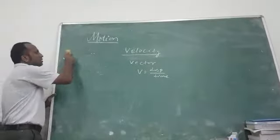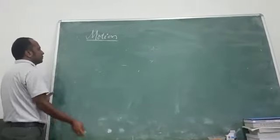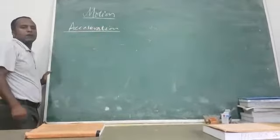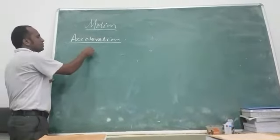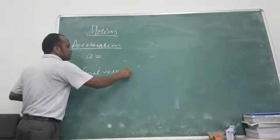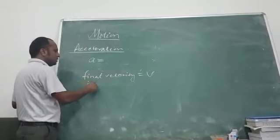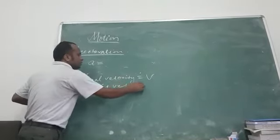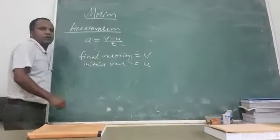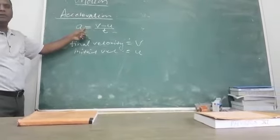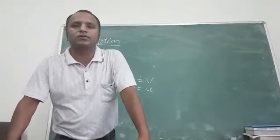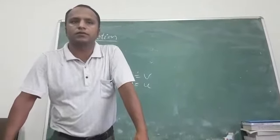The last topic of today's class is acceleration. Acceleration means the rate of change of velocity, and it is denoted by A. There are two types of velocity: final velocity, denoted by V, and initial velocity, denoted by U. Change in velocity means final velocity minus initial velocity per unit time. This is called acceleration. Acceleration is defined as the rate of change of velocity.